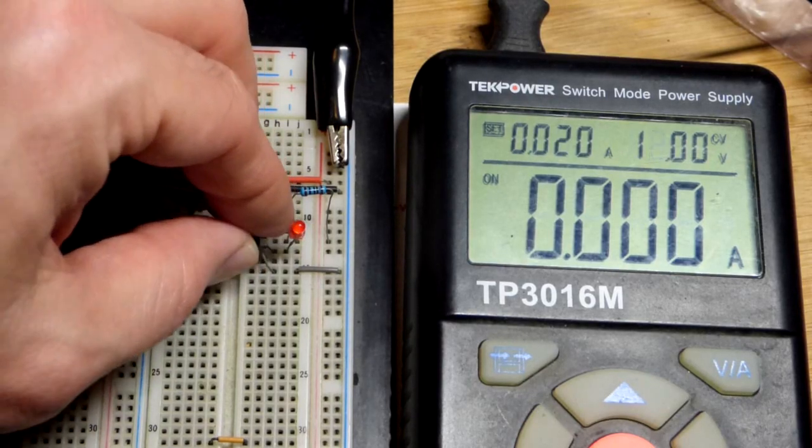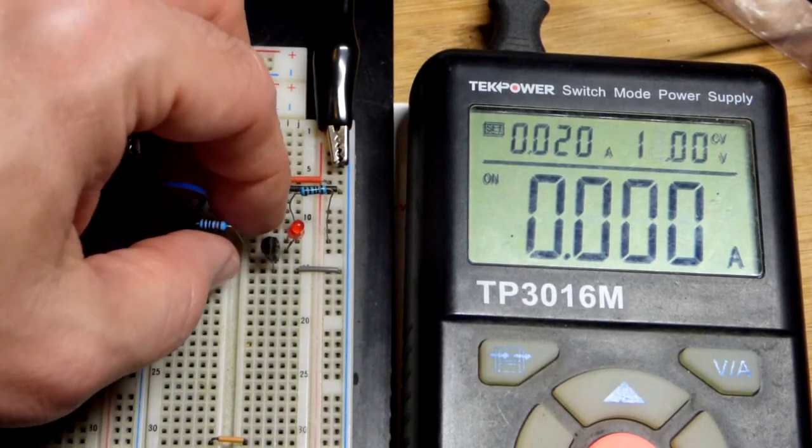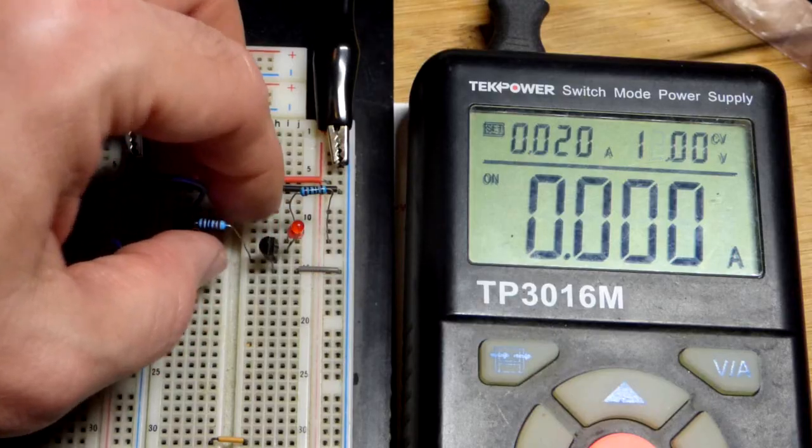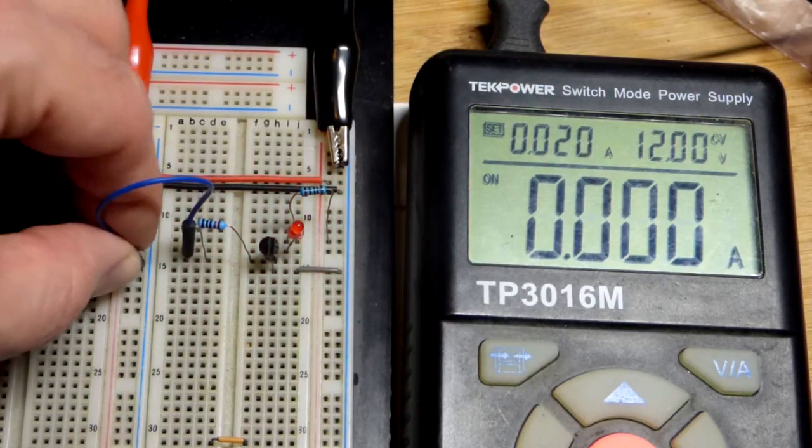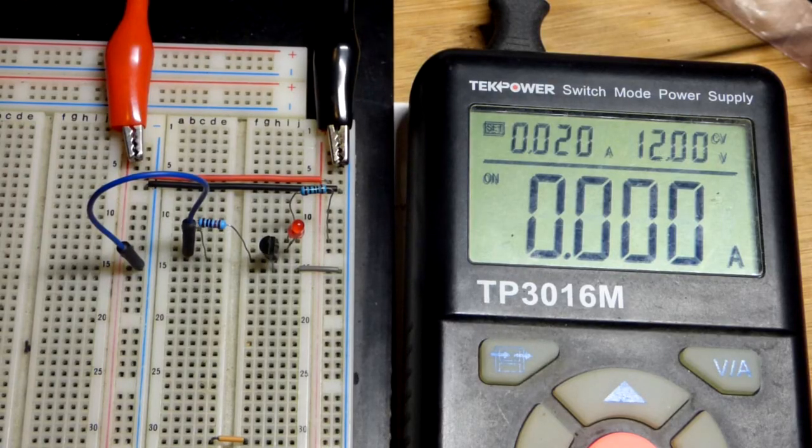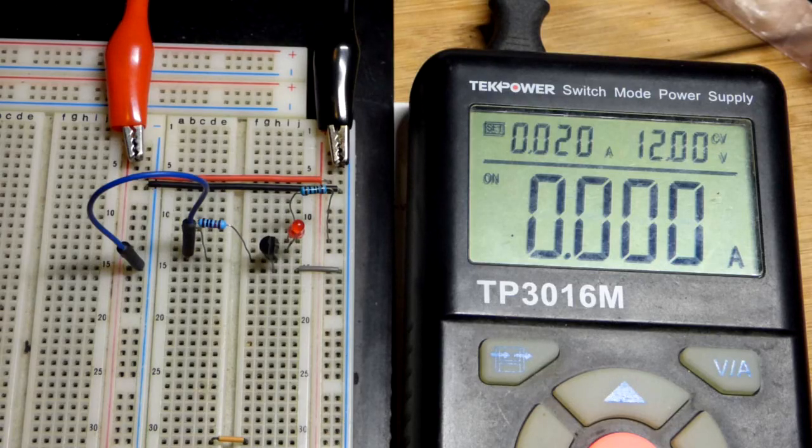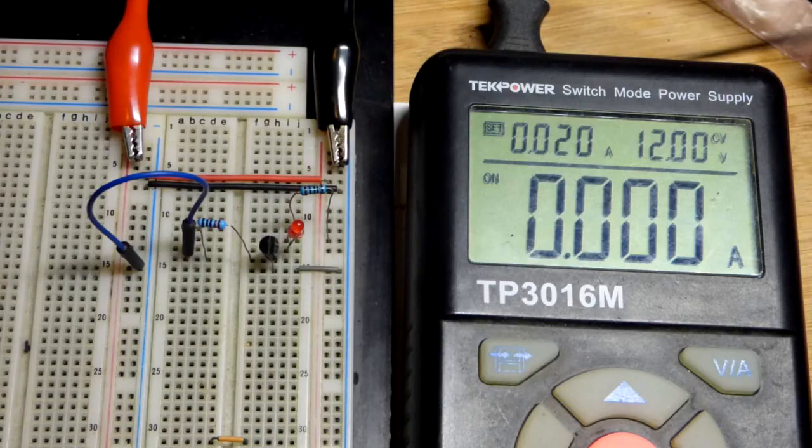So that's one way you can kind of test if the components can handle the voltage, whether you wired the transistor in backwards or not, if it's a bipolar junction transistor. If it's turning on when it shouldn't, a good chance it is backwards. So hopefully that makes sense.